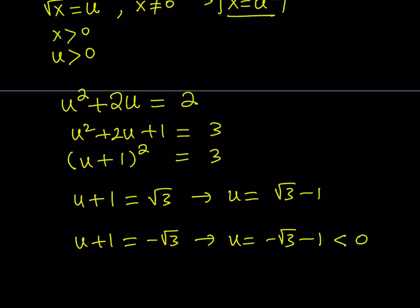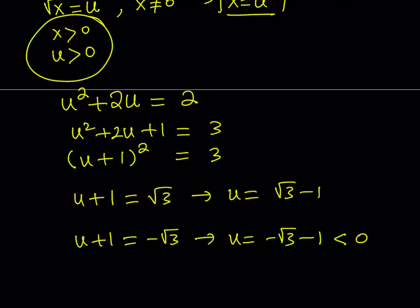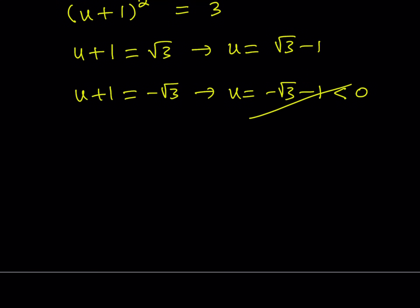Negative root 3 minus 1 is less than 0. So, that is not allowed because we know that x and u both have to be positive. So, this is not acceptable. We have to use the other solution. And root 3 minus 1 is positive. Great.